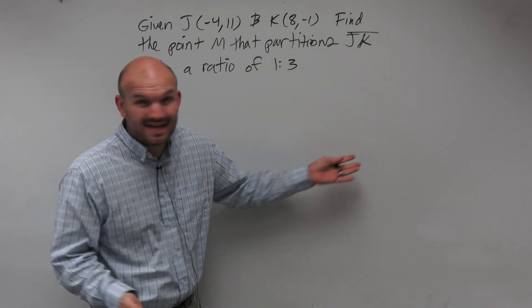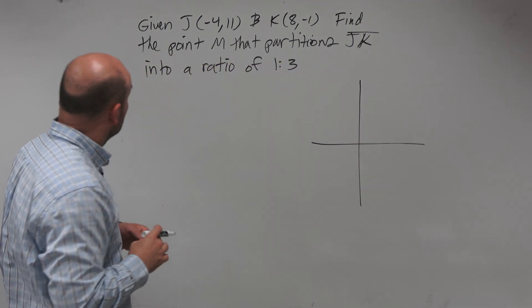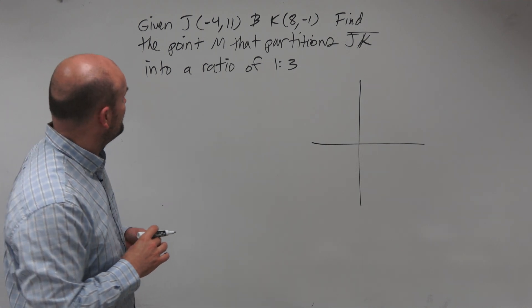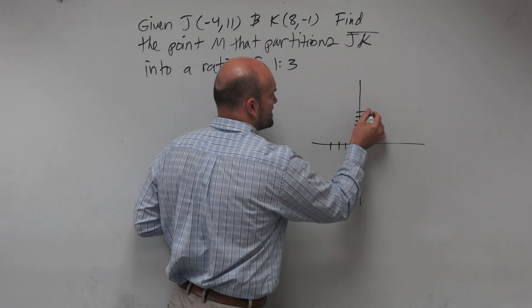So the first thing we're going to want to do is plot the points. Let's go ahead and just take a visual of this. We have negative 4, 11. So 1, 2, 3, 4, and then 1, 2, 3, 4, 5, 6, 7, 8, 9, 10, 11.